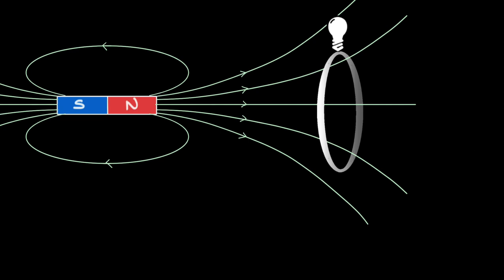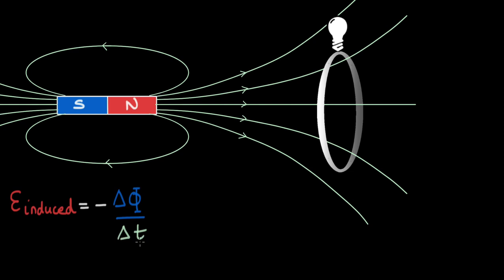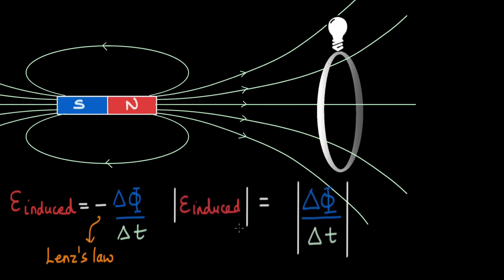This can be expressed mathematically, and this relation is called Faraday's law of electromagnetic induction, which states that the magnitude of EMF induced is equal to the rate of change of magnetic flux through the coil. The negative sign is called Lenz's law and helps predict the direction of current in the coil — we will cover that in another video. For this video, let's focus only on the magnitude of the EMF induced.